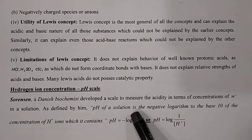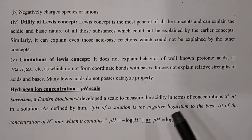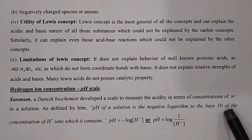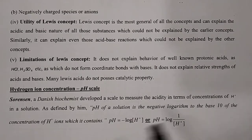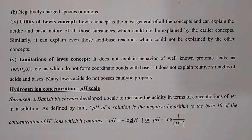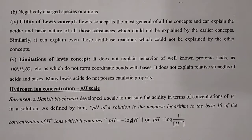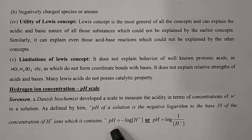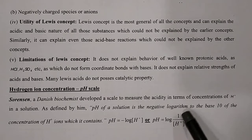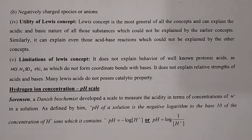pH of a solution is the negative logarithm to the base 10 of the concentration of H+ ion which it contains. The mathematical formula is: pH = −log[H+], or equivalently pH = log(1/[H+]). This is the mathematical statement of pH.